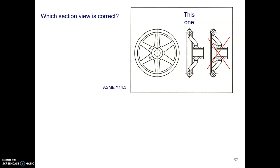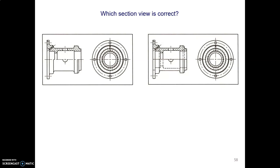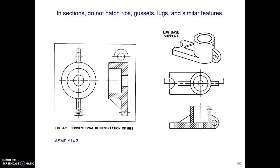How about these section views? This one catches a lot of people. Remember that we do not show hidden lines in section views. So the one on the left is correct because it does not have hidden lines. And in sections we do not hatch, call it accessory doodads. We don't hatch ribs and gussets and ears and so forth.